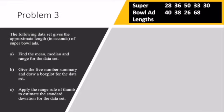For problem three, the following data gives the length of Super Bowl ads in seconds, and I want us to find the mean, median, and range for our data set. For part A, I want to find my mean. Remember, our mean is also called the average. It's the sum of all our values divided by how many values I have. So I'm going to take 28 + 36 + 50 + 33 + 30 + 40 + 38 + 26 + 68 divided by the number of Super Bowl ads I have, which is 9. That's going to give me 38.77. So the average length of a Super Bowl ad from our sample set is 38.77 seconds.